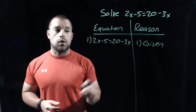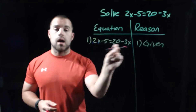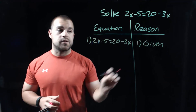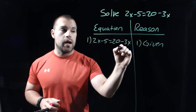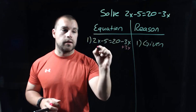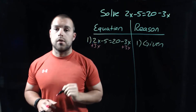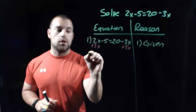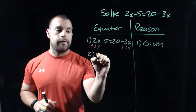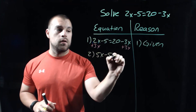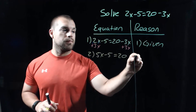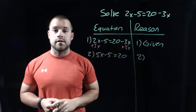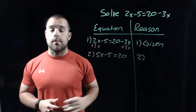Now thinking about solving this equation, right now we've got x's on both sides. We need to get those x's on the same side. So I'm going to take this minus 3x and add 3x to both sides of the equation. For step number two, the equation we end up with is 5x minus 5 equals 20. The property we used — we added something to both sides — so that's the addition property.